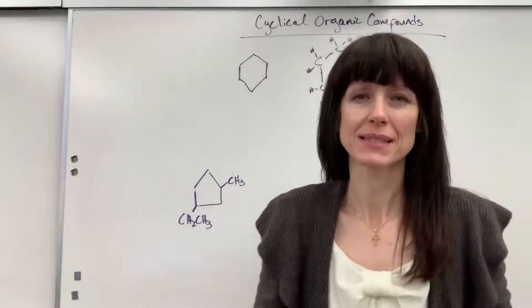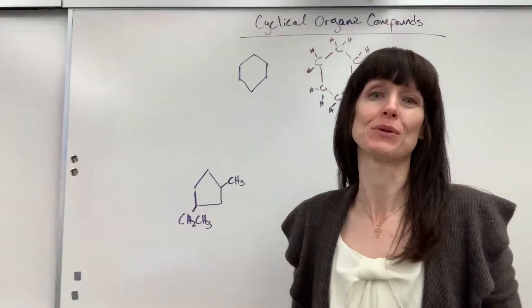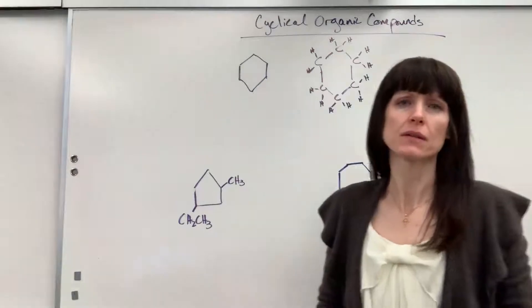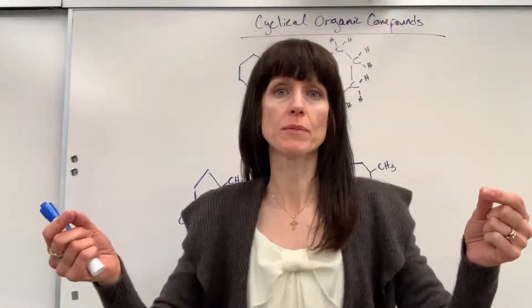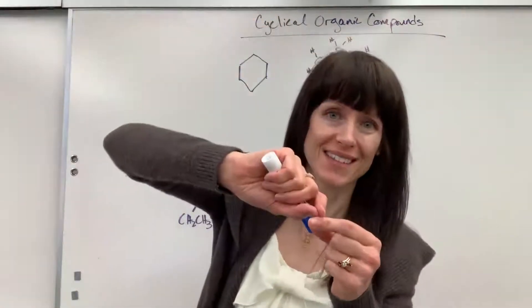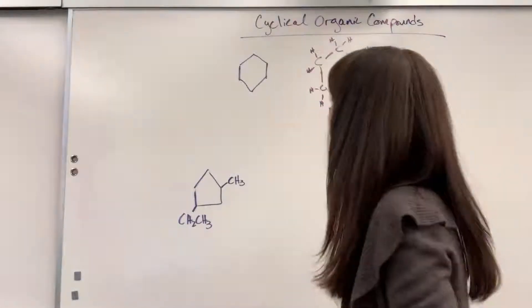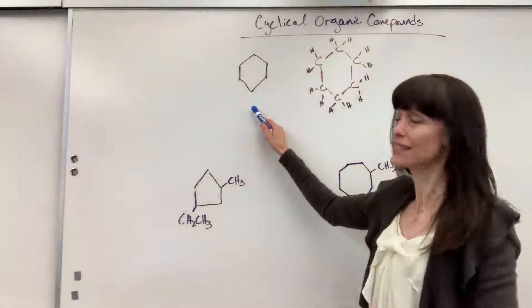Hi, we're going to talk basics about naming cyclical organic compounds. Cyclical compounds simply means that you have this long carbon chain and it wraps around and attaches to itself. So here's a beginning example for you.